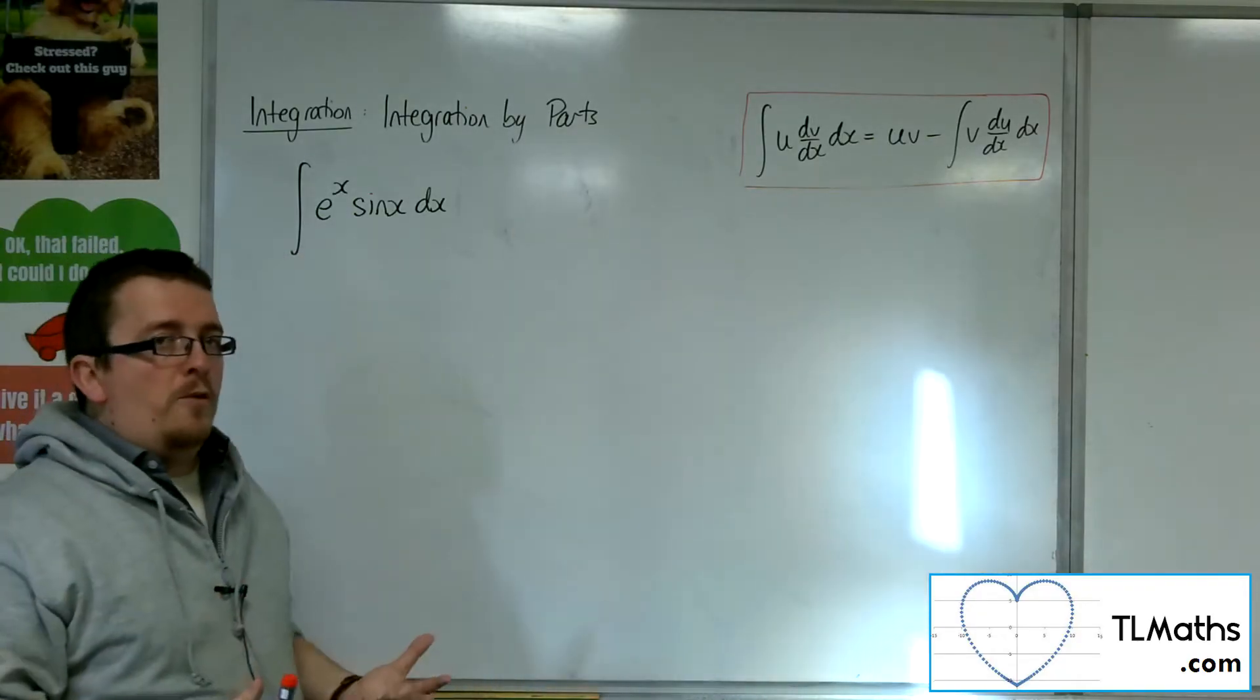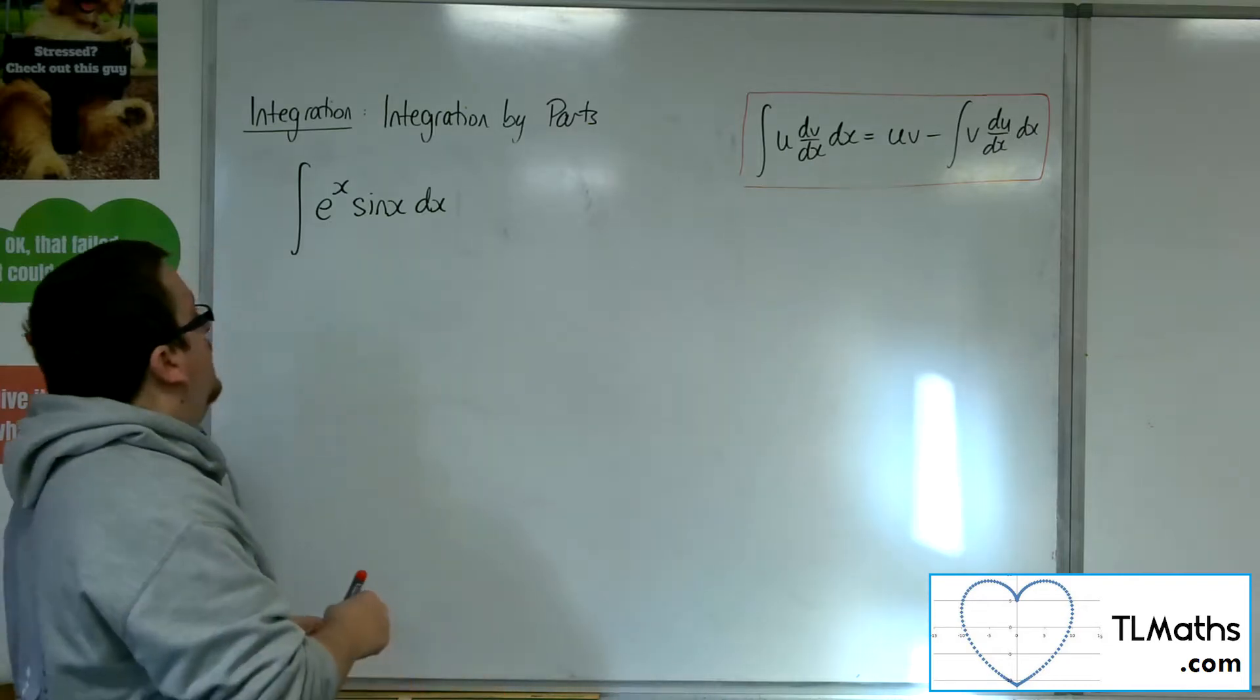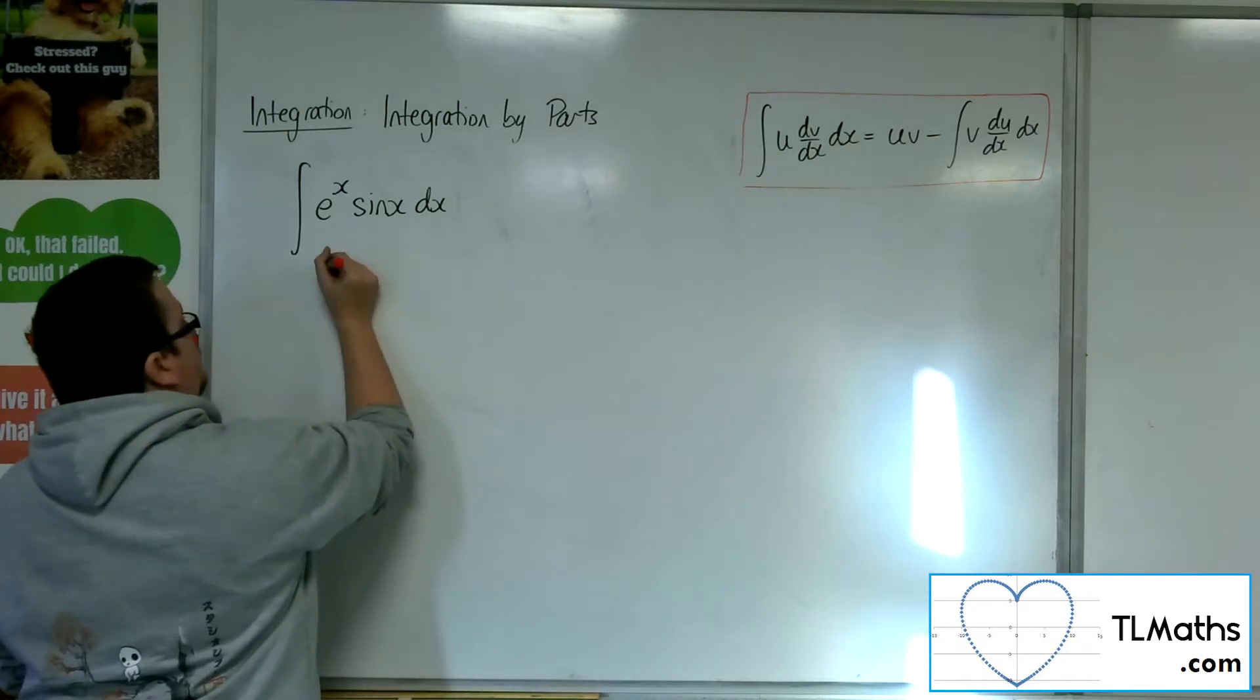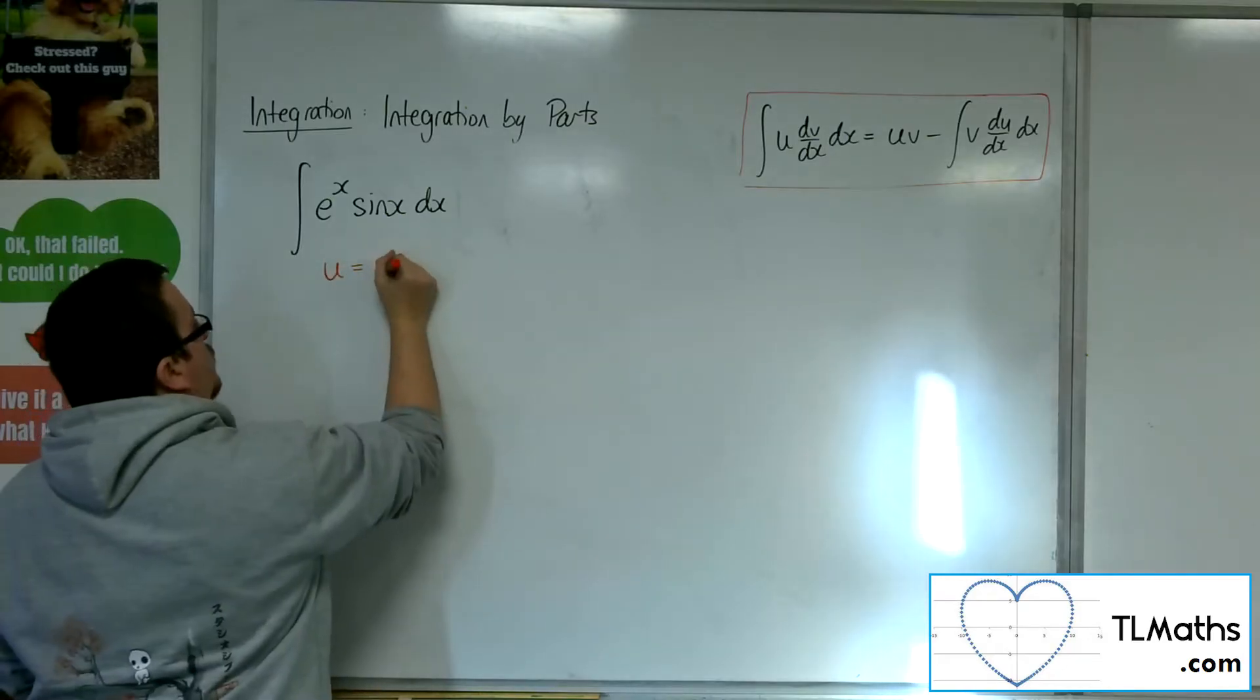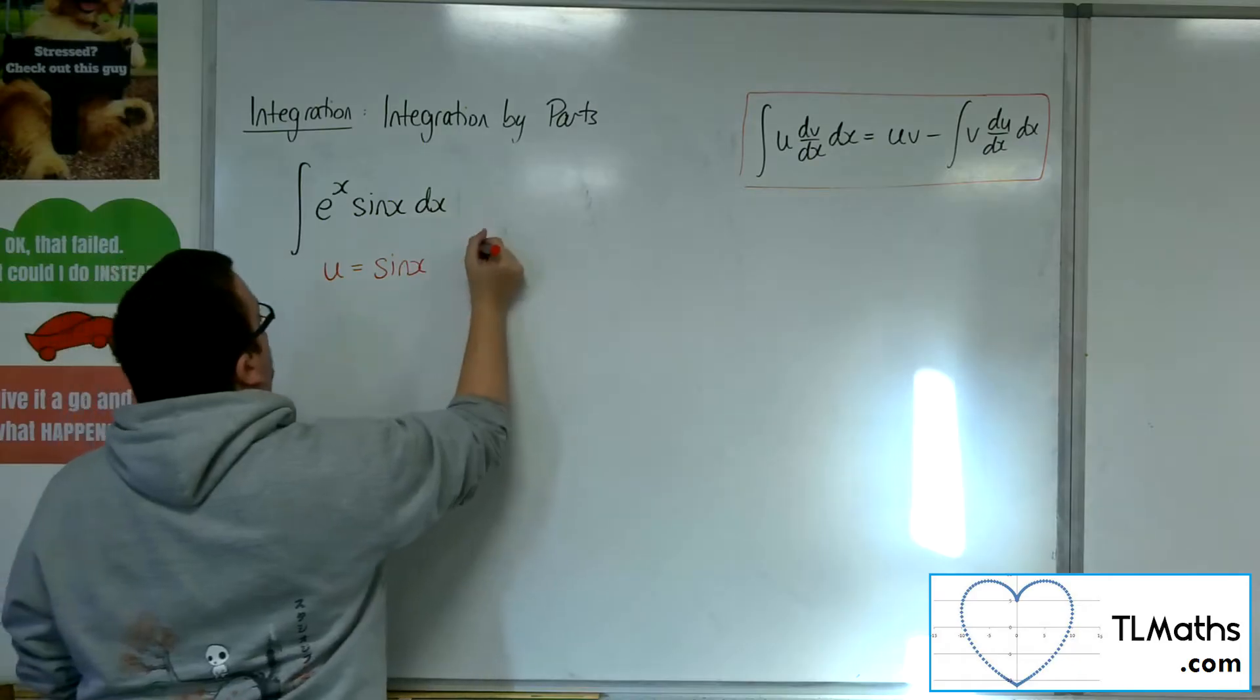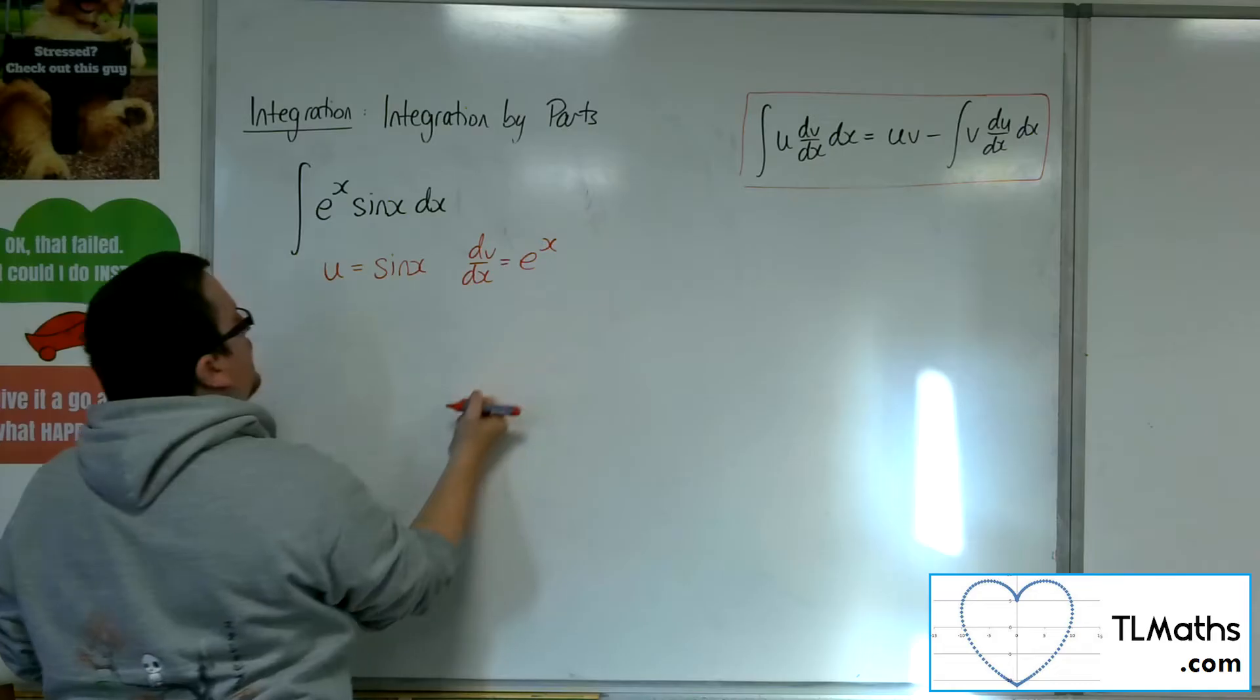So how do we go about it? Well, we should work through it in precisely the same way as we always have. So using LATE, it would say to use the trigonometry before the exponential. So the u will be sine x, the dv by dx will be e to the x.